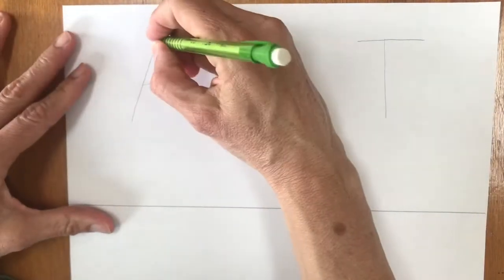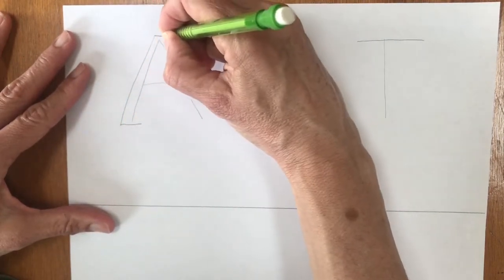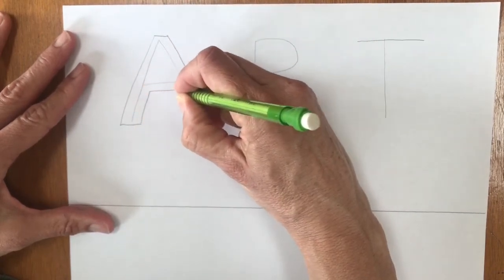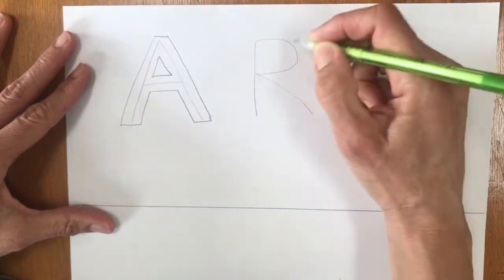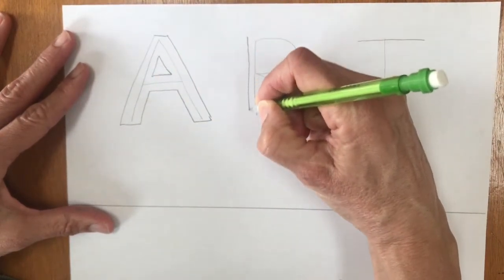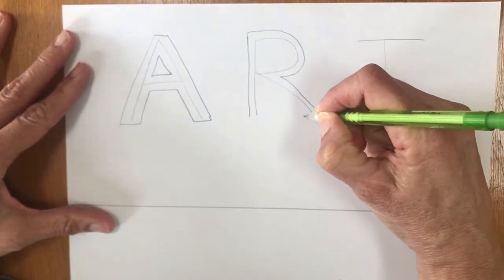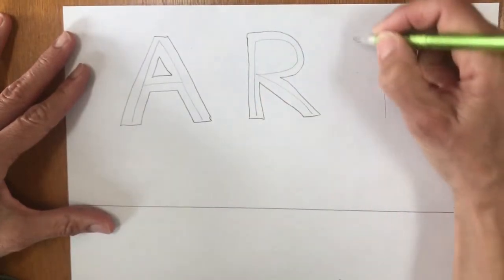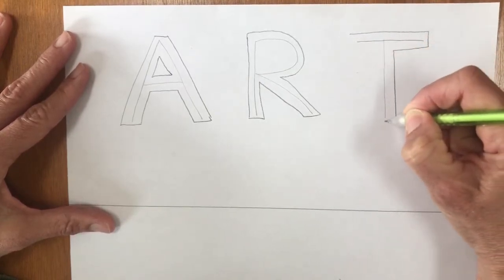I drew them pretty light because now remember how we make our block letters. I'm going to make my letter go around the outside of the A and inside the triangle there and the R I'm going to go around the outside of the R. You see the original letters with the lines are still inside there and for my T I'm going to go around my T.